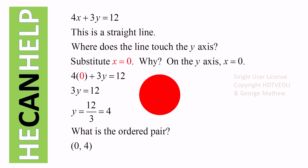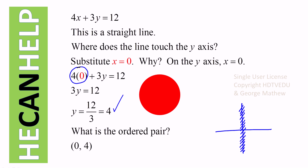Now let's get the red point — the point where the graph touches the y-axis. On the y-axis, x is equal to 0. So we substitute x equals 0 and solve for y. When you substitute x equals 0, the 4x term goes to 0, so you get 3y is equal to 12.